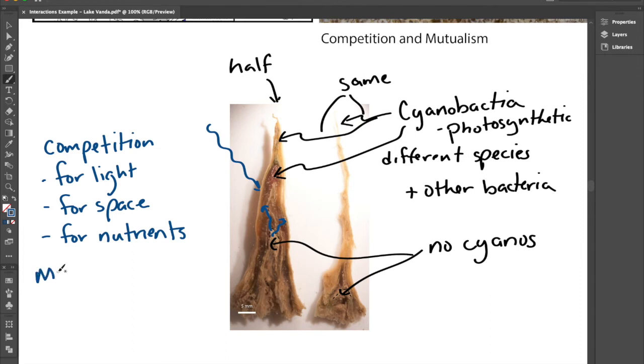That's an example of mutualism. In the case of mutualism, the cyanobacteria provide food through photosynthesis. The cyanos provide food for the other bacteria in the organic matter and the other bacteria, when they cause decay of those bacteria provide nutrients for the cyanobacteria.